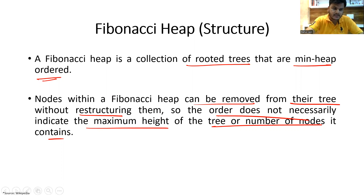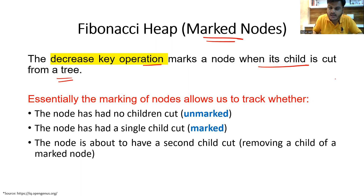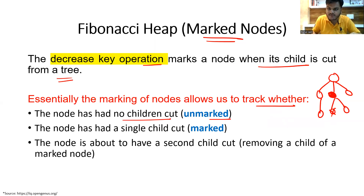The concept can be explained in some basic terminology. One important term is marked nodes. The decrease key operation marks a node when its child is cut from a tree. To track the history of operations performed on the tree, we generally mark a node. The marking of nodes allows us to track whether the node has no children cut — unmarked — meaning no nodes have been cut from it. If a node has a single child cut, it should be marked. But if more than one child is cut, the node would become a leaf node rather than remaining a root node.